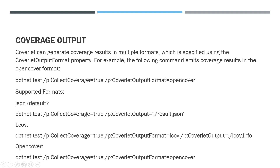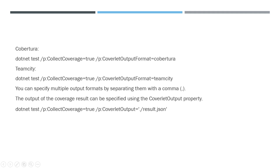Coverlet can generate coverage results in multiple formats, specified using the coverlet output format property. For example, the following command emits coverage results in the OpenCover format. You can specify multiple output formats by separating them with a comma. The output location of the coverage result can also be specified using the coverlet output property: dotnet test /p:CollectCoverage=true /p:CoverletOutput=/result.json.